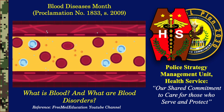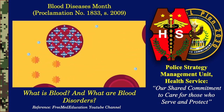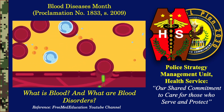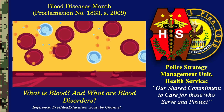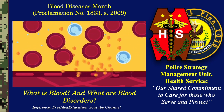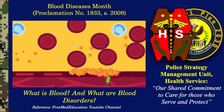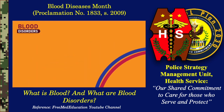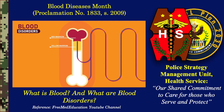Red blood cells transport oxygen to your body's organs and tissues. White blood cells help your body fight infections. Platelets are tiny molecules that stick together and build a clot on bleeding wounds. All three cell types form in the bone marrow, which is the soft tissue inside your bones.